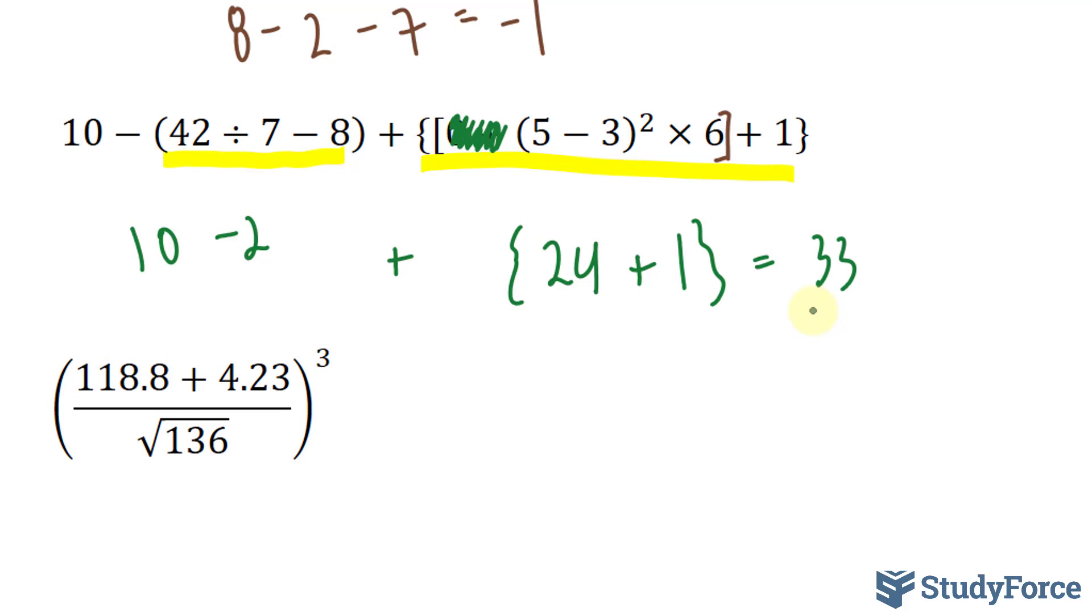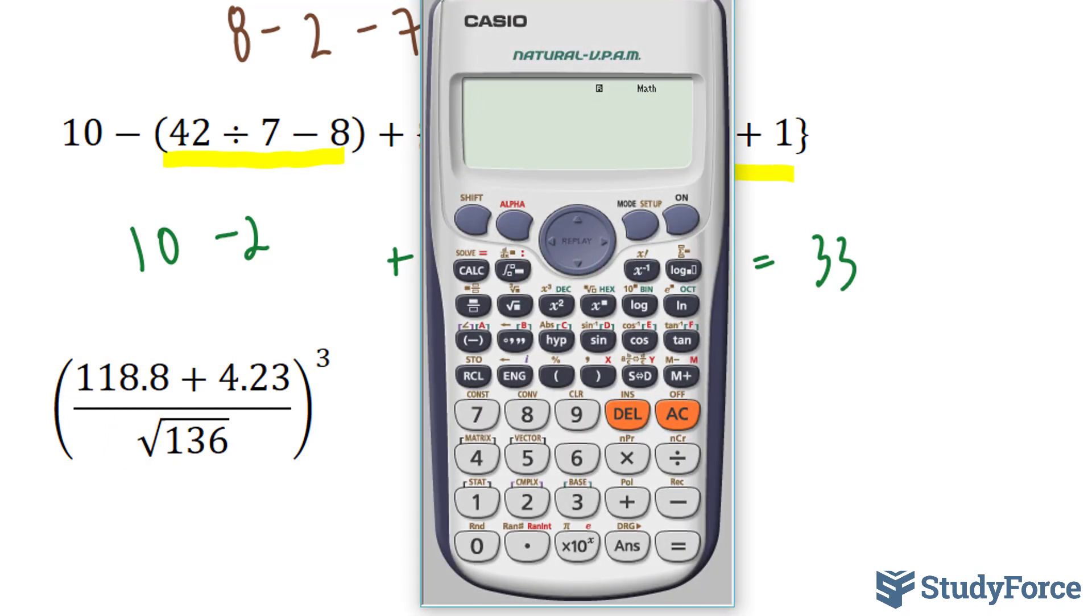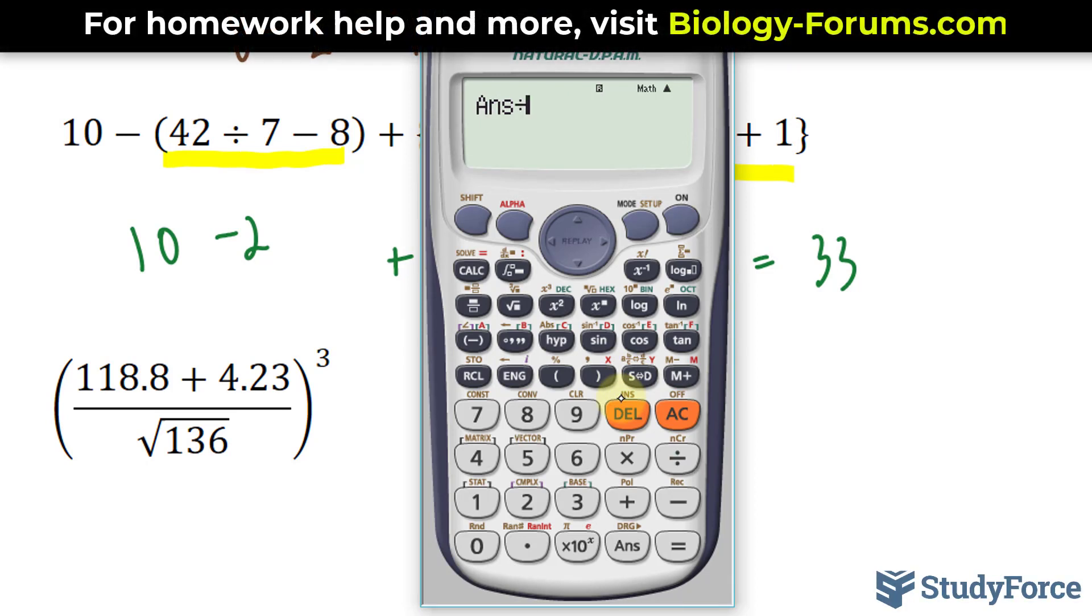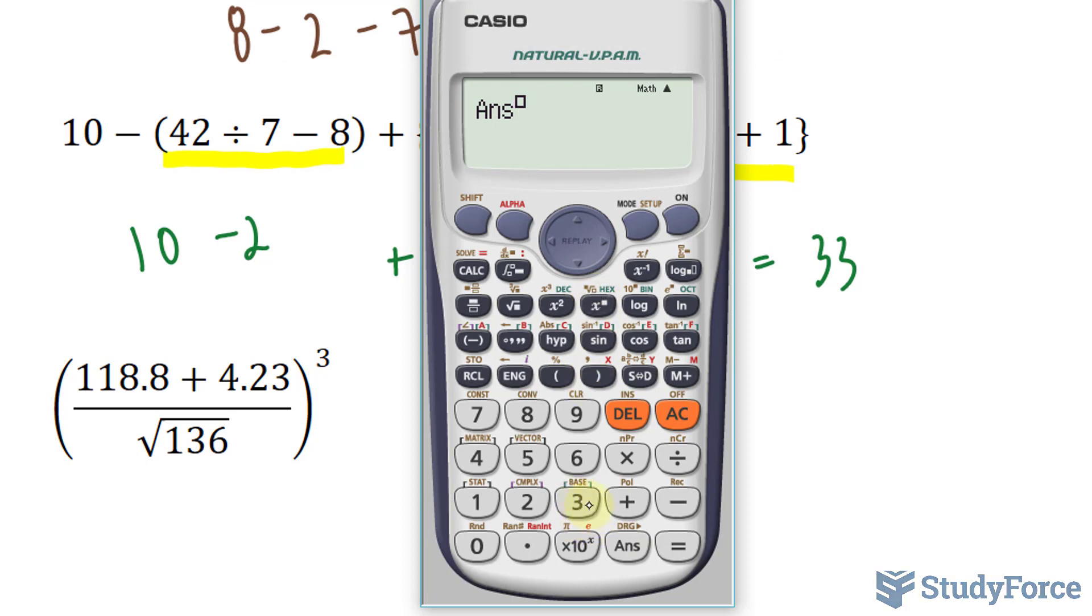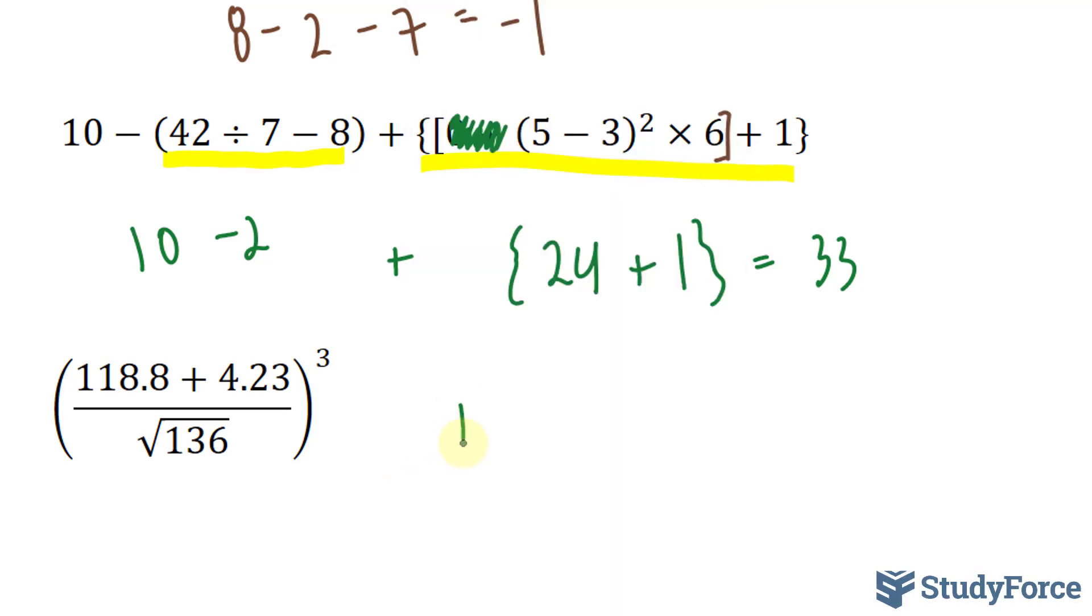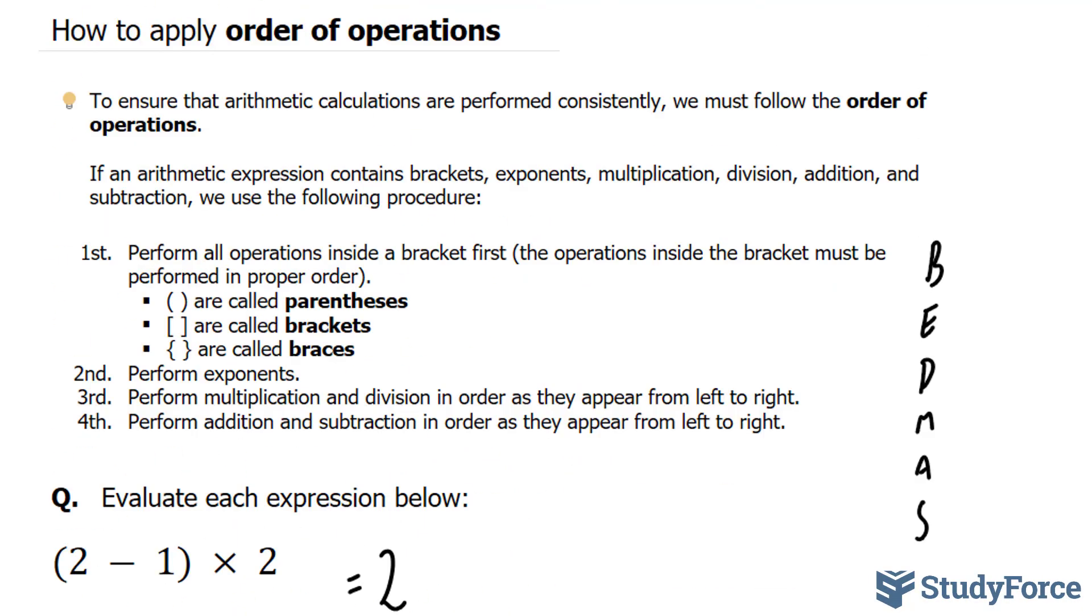And last but not least, in this expression we have a fraction, numerator up here and denominator down here, and this is all being raised to the power of 3. Let's focus on the bracket, and specifically we'll focus on the numerator, and then we'll find the answer for the denominator. 118.8 plus 4.23, we'll divide this by the square root of 136, and then raise all of that to the power of 3, giving us 1174.15. And there you have it. That is how to apply the order of operations.